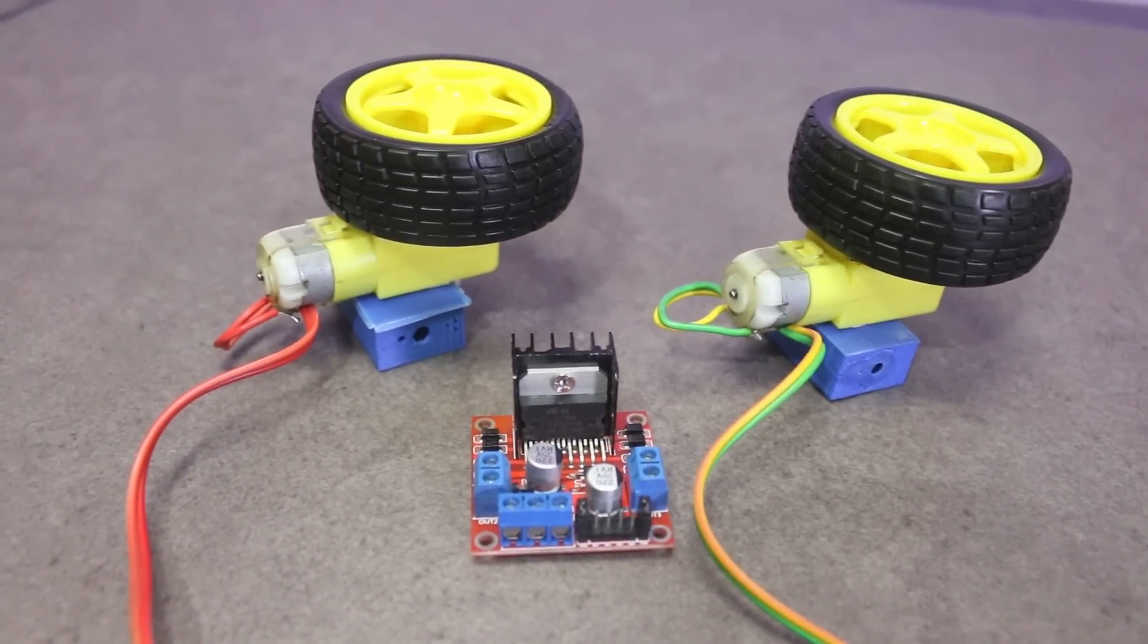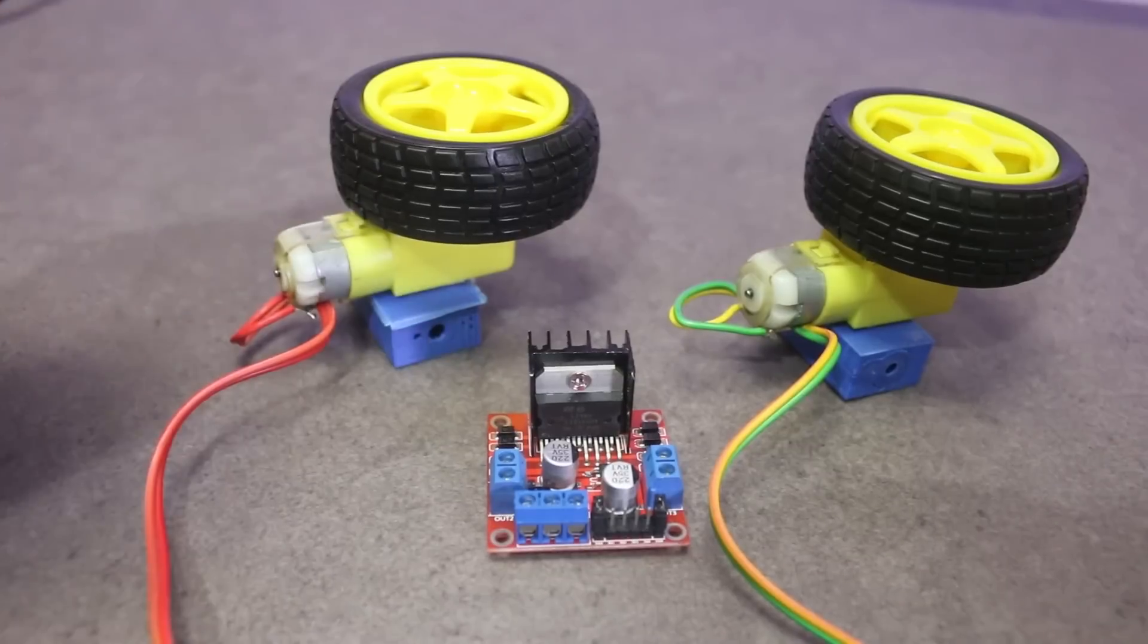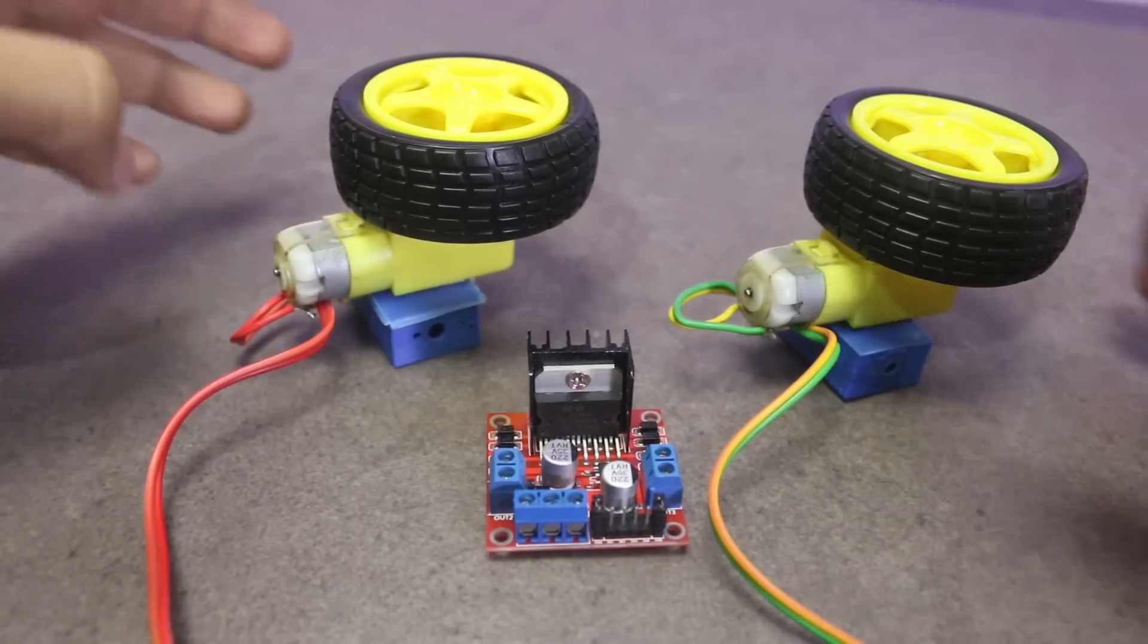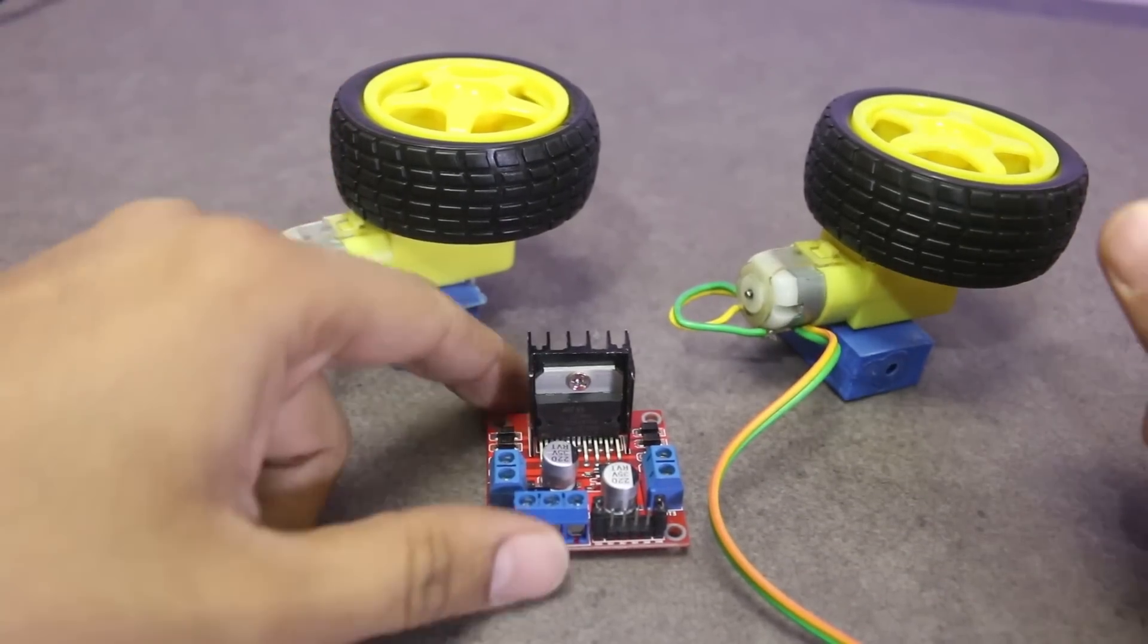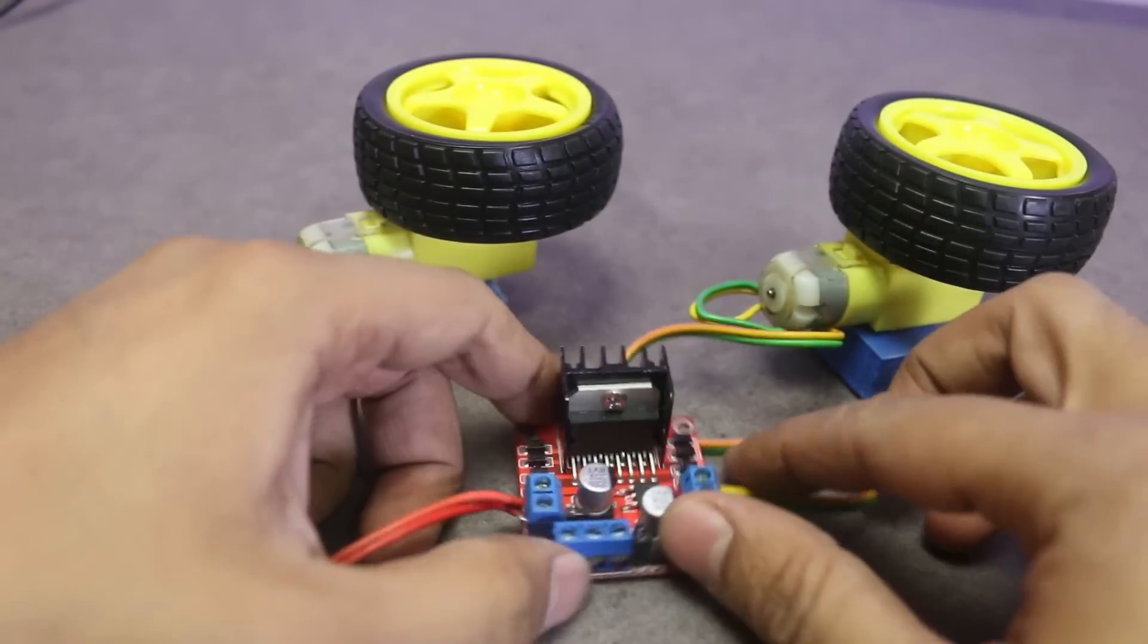Now, I am going to connect motors and power supply to demonstrate how these 4 pins control direction. And after this, I will connect this module with Arduino to control the speed and direction with microcontroller. Well, I am going to connect the motors and power supply. Connect motor A with left connector and motor B with the right connector.